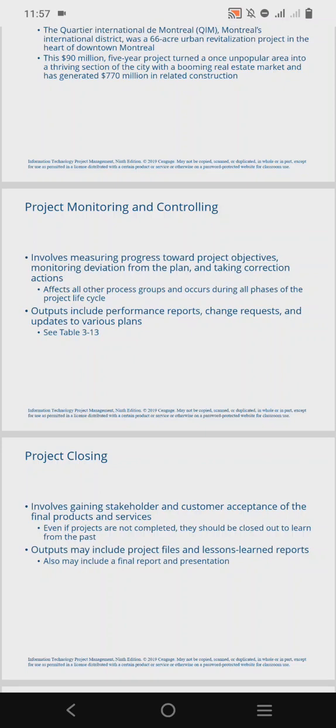Project monitoring and controlling involves measuring the progress towards achieving the objectives of the project, monitoring deviation from the plan — ensuring the plan is still being stuck to — and then taking corrective actions where needed. This process affects every other process group, and it occurs during every phase of the project life cycle.